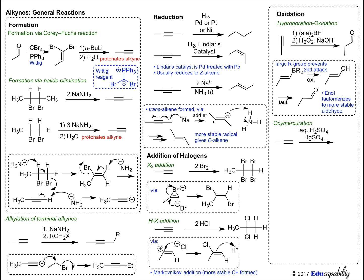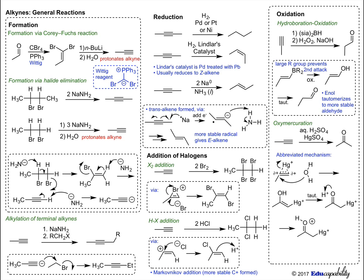Oxymercuration can be used to produce ketones directly from alkynes. The alkyne reacts to form a mercurinium ion. Water then attacks at the more substituted carbon atom, since the mercurinium ion has carbocation resonance, and the secondary carbocation contributes more to the overall structure than the primary carbocation. The enol tautomerizes to the ketone, sulfuric acid protonates the carbonyl, promoting elimination of mercury, forming another enol, and a final tautomerization gives the ketone.